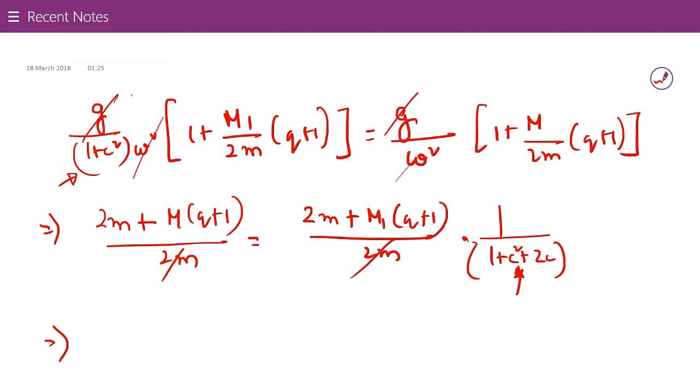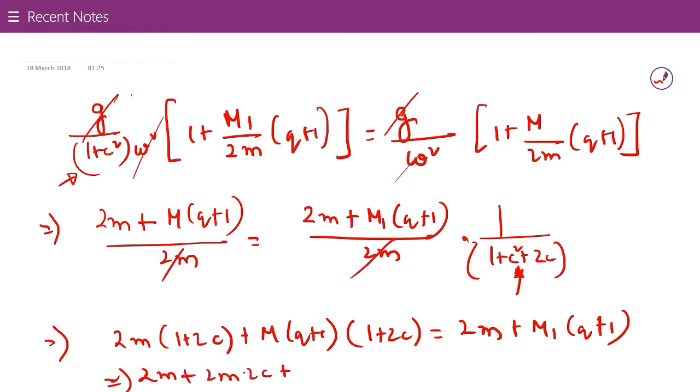It becomes 2M(1 + 2C) = M(Q + 1)(1 + 2C). Proceeding further, it will be 2M + 2M·2C, then M·2C·(Q + 1) = 2M + M₁(Q + 1). This 2M and 2M will cancel out. Let's proceed to the next page.